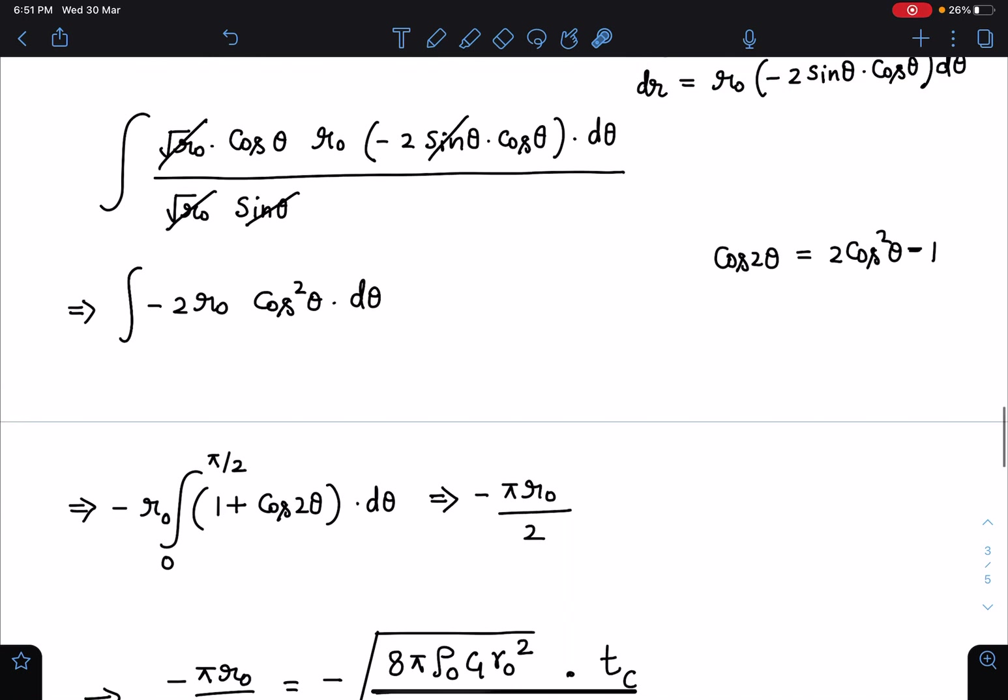My limits will become 0 to π/2 and you can see cos function cos 2θ. It will become 0 here minus π/2 plus π/2 or you can say 0 to π kind of function in the cos will come. You can check and finally we are going to get this as minus π r0/2.